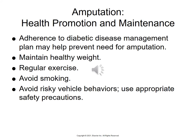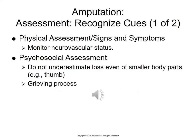For health promotion with amputation patients, we want them to avoid obesity, not smoke, maintain regular activity, avoid risky behaviors, and adhere to their diabetic disease management program to prevent further amputations. We want to assess their neurovascular status — checking pulses, skin color, skin temperature, and sensation.